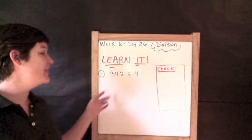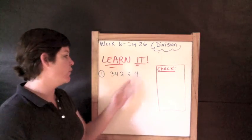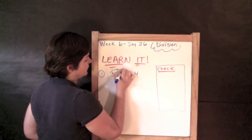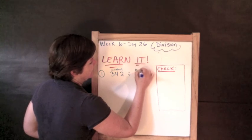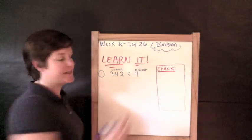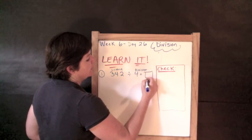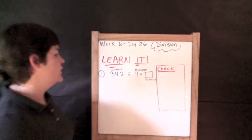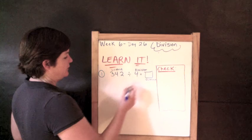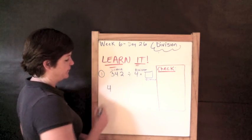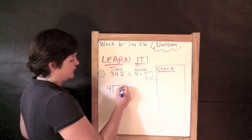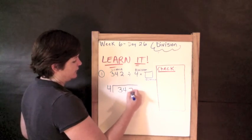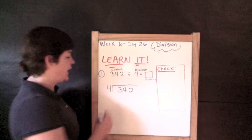Number one: 342 divided by 4. The first number is our dividend, the second number is our divisor, and we are finding the answer which is our quotient. For long division we set it up differently — we put the divisor outside and draw a half-box, the dividend goes inside, and the quotient goes on top.